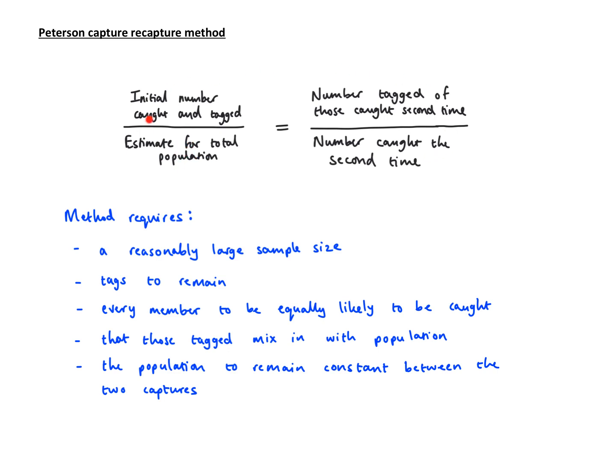This formula uses a different form so that the bottom thing here, the population estimate, can be found. Obviously you can do some rearranging and find that.